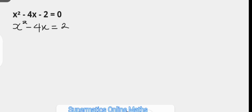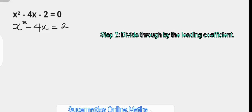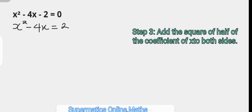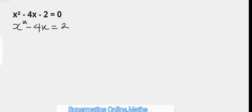Since the coefficient of x squared is 1, the step to divide through by the leading coefficient is going to be skipped — we'll see what we do about that in the second problem. The third step is to add the square of half of the coefficient of x to both sides, making the left-hand side a perfect square trinomial which can easily be factored.